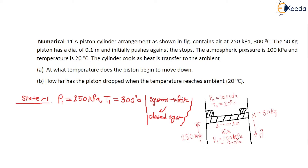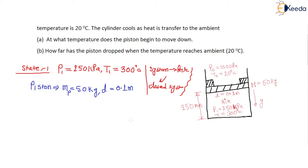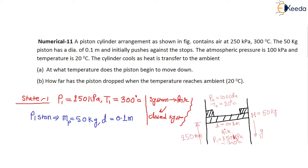The piston mass is 50 kg. The cross-sectional dimension is given as diameter: d = 0.1 meter. Initially the piston is pushed against the stop, meaning the piston exerts a force on the stop due to high pressure. The atmospheric pressure and temperature conditions are also given.